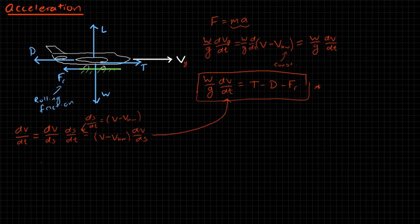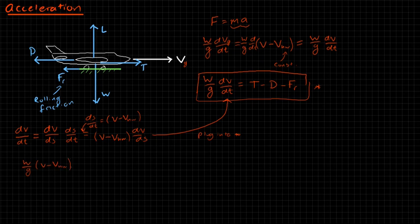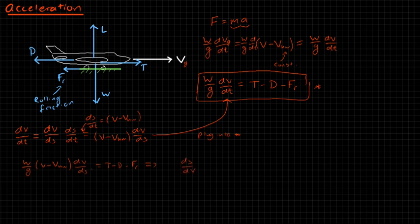Plugging this into equation star, we can rewrite it as W over g times (V minus V sub hw) times dV/ds equals T minus D minus F sub r. Rearranging, we get ds/dV equals W over g times (V minus V sub hw) divided by (T minus D minus F sub r).